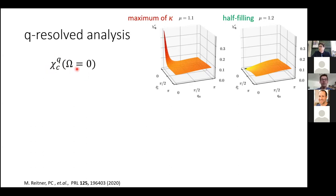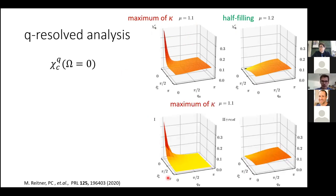Performing the full q-analysis: at the maximum of kappa we see a strongly peaked chi(q) at q=(0,0), while at half filling we only find a shallow maximum due to symmetry reasons — the first term is gone. Taking this maximum kappa contribution and splitting up all terms for each q point individually, we find a strongly peaked contribution coming from the first term — the lowest real negative eigenvalue — while summing all the rest basically reproduces the half-filling result. This explains why at half filling we see no maximum of kappa: this term is missing due to symmetry reasons.